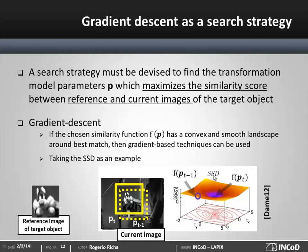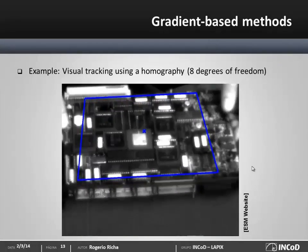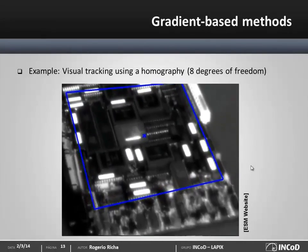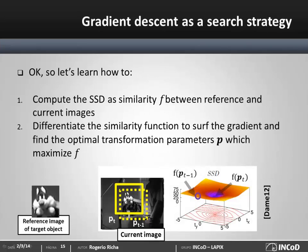Note that a decrease in the SSD score means an increase in similarity. The fact that we can surf the gradient of the cost function is extremely helpful, especially when tracking with transformation models with multiple degrees of freedom, and we can achieve sub-pixel accuracy with very little computational effort compared to particle filtering or exhaustive searching. The SSD is not the only suitable similarity function — there have been several alternatives proposed in the literature showing different properties such as invariance to illumination variations, but this will be the subject of a future video. So let's now learn how to compute the SSD between two images and how to differentiate the similarity function to surf the gradient and do visual tracking.